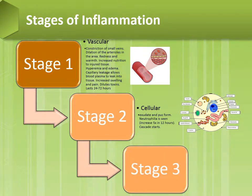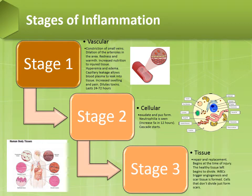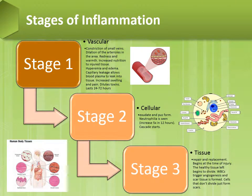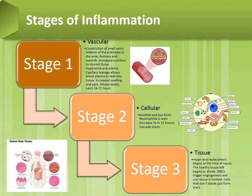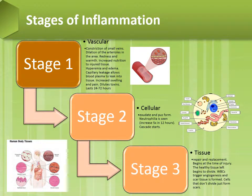Stage 3 is the tissue stage. During this stage there is tissue repair and replacement. It begins at the time of injury, and the healthy tissue left begins to divide. White blood cells trigger angiogenesis, and scar tissue is then formed. Cells that don't divide just form scars.